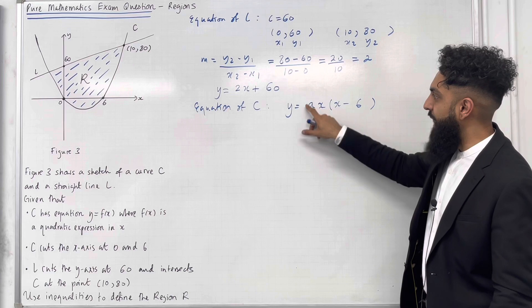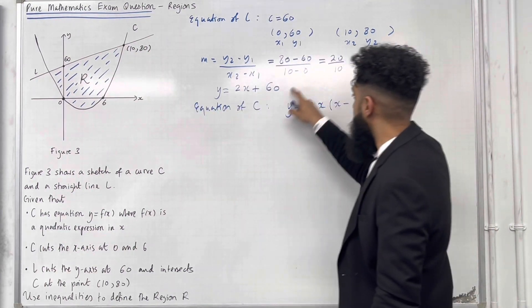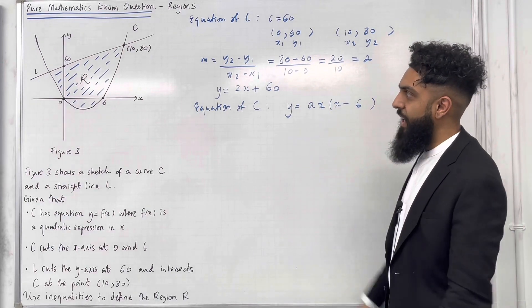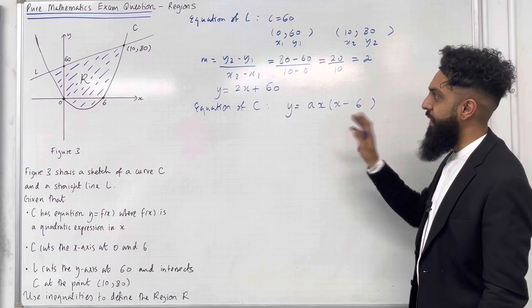I'm going to work out the scale factor A by substituting X equal 10 and Y equal 80 into this particular equation because 10, 80 is on the curve C. This will give me the scale factor for this particular quadratic.